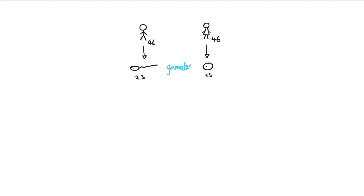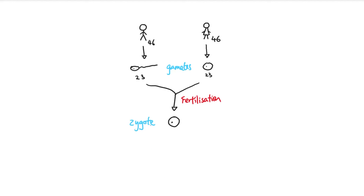We have a term for sex cells — they're called gametes. Gametes have half the amount of genetic information, or half the number of chromosomes, compared to a regular adult cell. The gametes fuse together during sexual reproduction in a process called fertilization, forming a single cell called a zygote. The zygote contains 46 chromosomes, restoring the chromosome number, and it will go on to become a full human being.